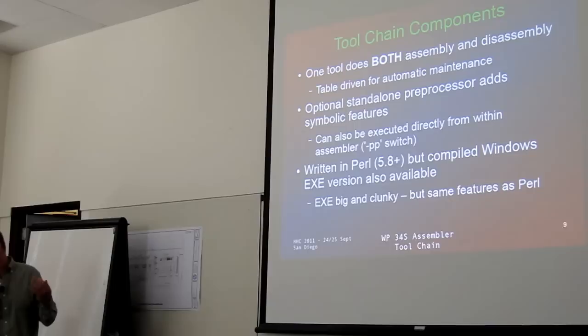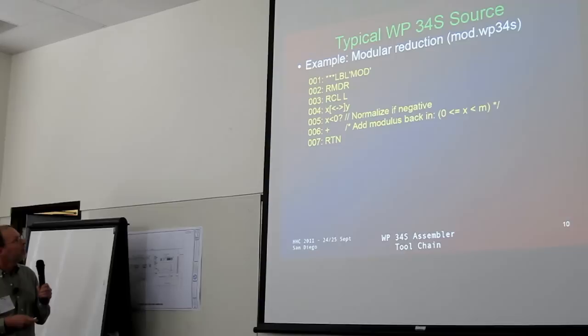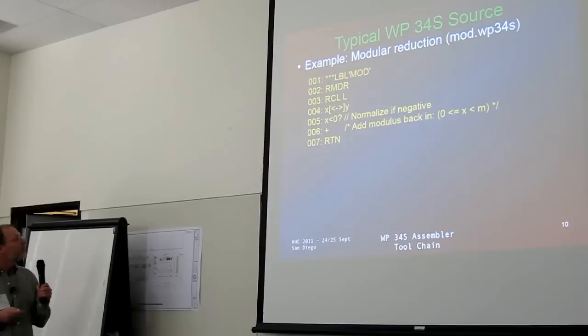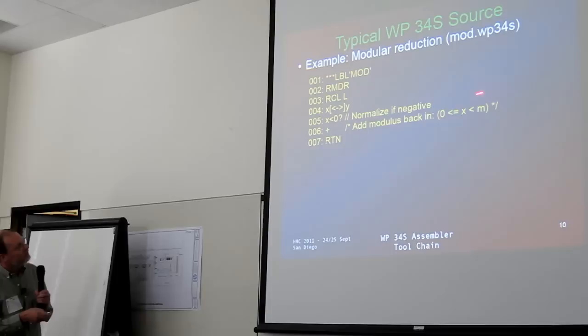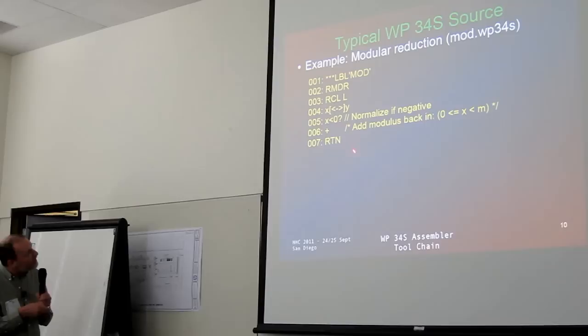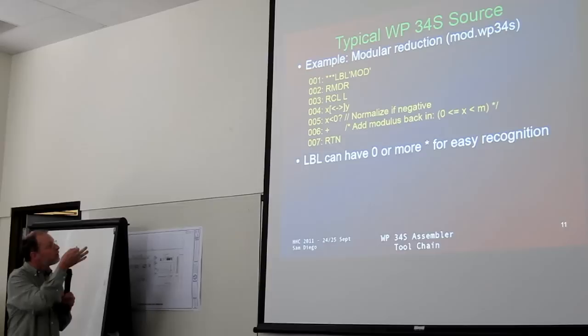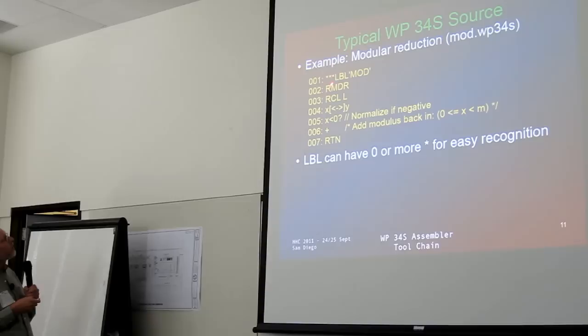This is a simple little ASCII script. Ironically, on the museum in the last two weeks, mod was a big topic for some reason. This is a real mod in my terms — normalized between zero and the modulus, not the remainder actually in the machine. It's just a little example of what goes into the assembler. You can put some markers in to make it easier to see where things are.